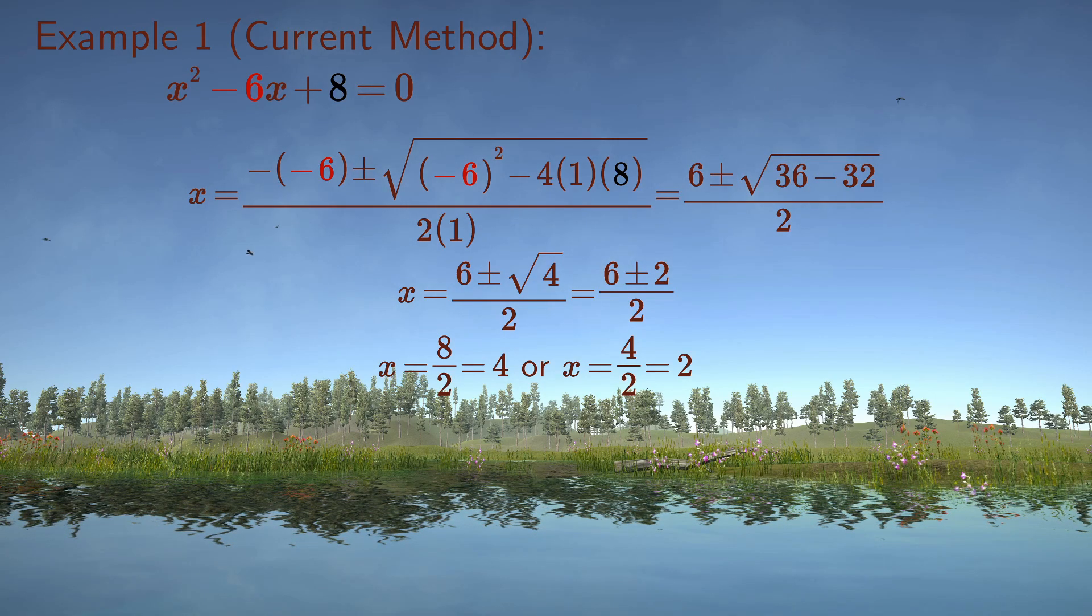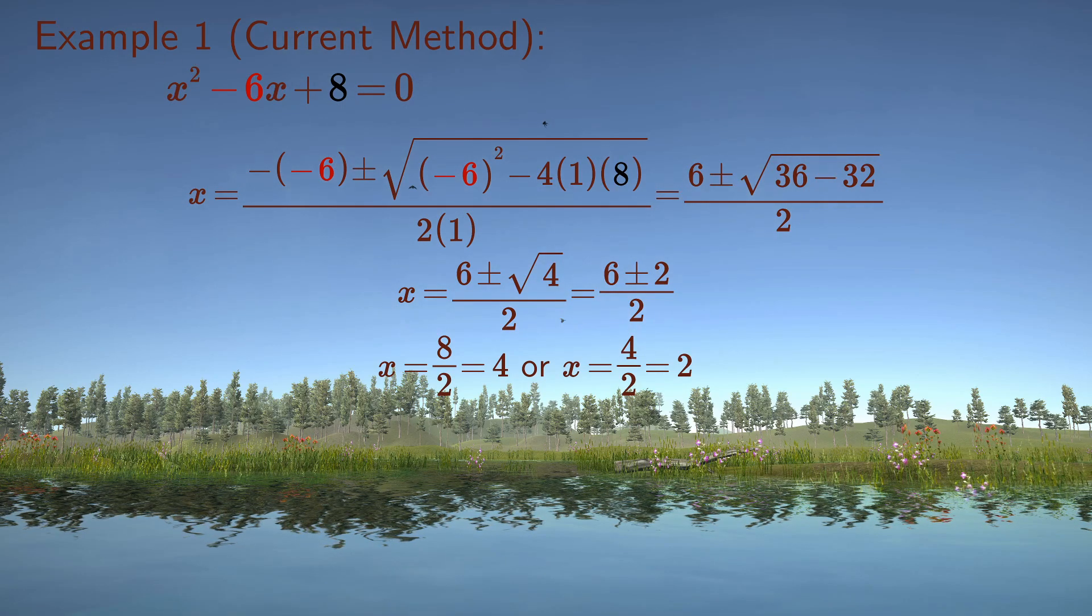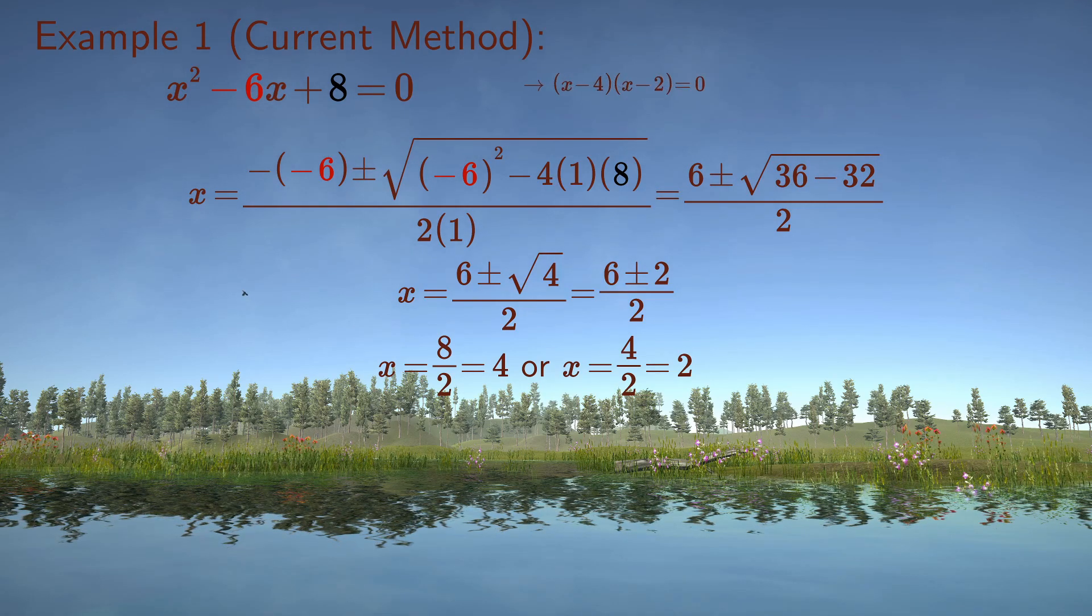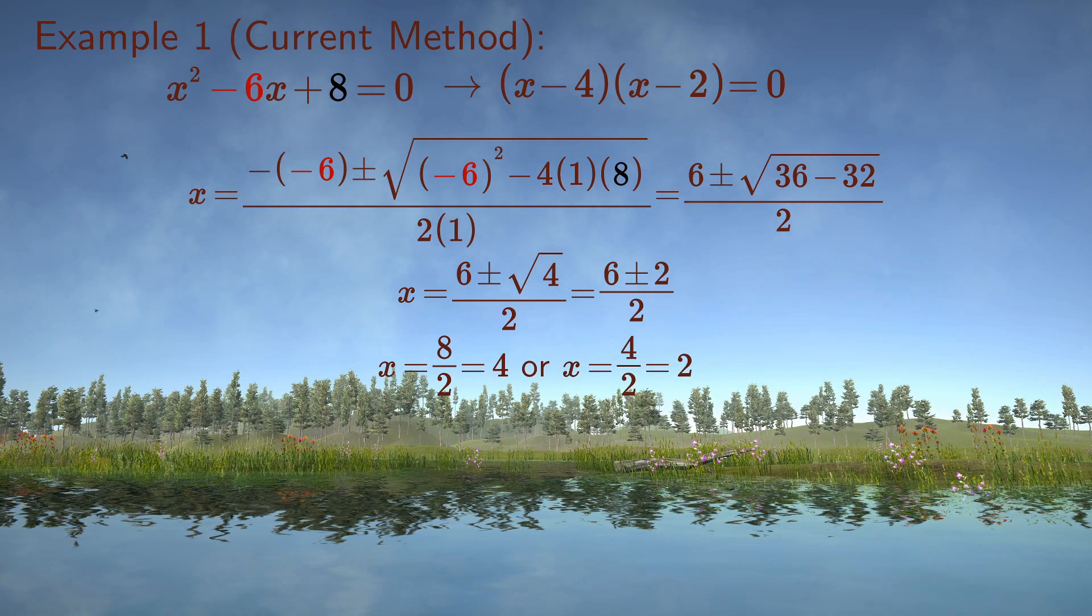This gives us the two roots: x equals 6 plus 2 over 2 equals 4, or 6 minus 2 divided by 2 equals 2. We can therefore rewrite the quadratic equation as x minus 4 times x minus 2 equals zero.